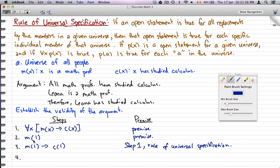So given that, this will give us c(l). So therefore, we know she has studied calculus. So this is step two and three, and that is because we're using the rule of detachment.